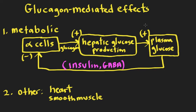So we have a feedback loop here that entails glucagon from the alpha cells, the liver, and plasma glucose. It's also important to keep in mind that glucagon's metabolic effects aren't limited to the liver. There are glucagon receptors on adipose cells that are very important in regulating fatty acid release and fatty acid breakdown in adipocytes, and those fatty acids play a very important role in going to the liver, being oxidized, providing the energy for gluconeogenesis, and also providing the substrate for ketone bodies.